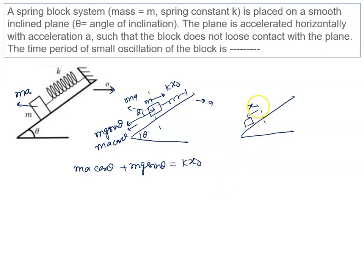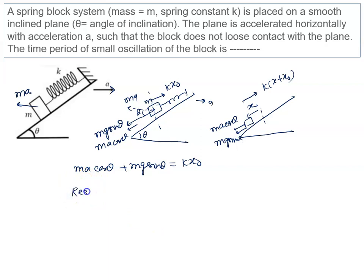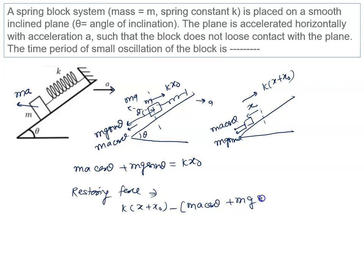When we displace the block downward by distance x, the upward spring force becomes k times (x plus x naught). The downward force remains the same: ma cos theta plus mg sin theta. So the net restoring force is k(x + x naught) minus (ma cos theta + mg sin theta).